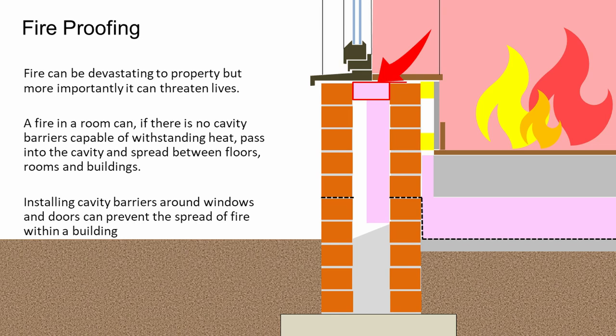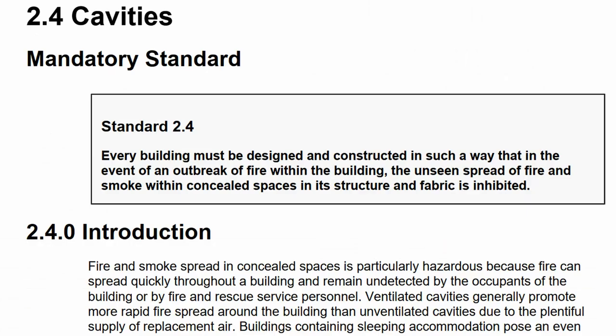Fire in a room can, if there are no cavity barriers, jump from the room into the cavity and spread between rooms and different buildings. The Scottish Building Regulations, Regulation 2.4, Standard 2.4, states that every building must be designed and constructed in such a way that in the event of an outbreak of fire within the building, the unseen spread of fire and smoke within concealed spaces in its structure and fabric is inhibited. The key point is unseen spread of fire in concealed spaces — they're really talking about various cavities within the building.